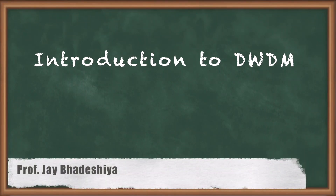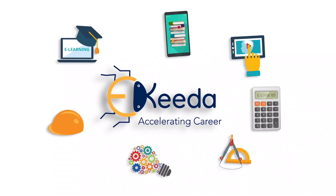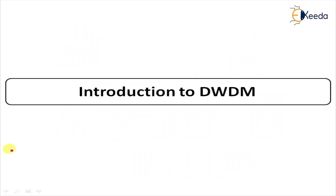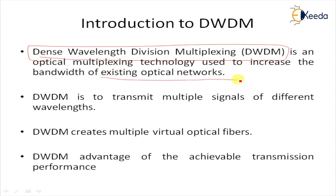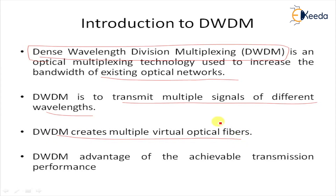In this lesson, we are going to learn about DWDM — Dense Wavelength Division Multiplexing. DWDM is an optical multiplexing technology used to increase the bandwidth of existing optical networks. The basic principle of WDM is to transmit multiple signals at different wavelengths at the same time on the same fiber. This technology also creates multiple virtual optical fibers to increase bandwidth on an existing fiber optical backbone or optical network.